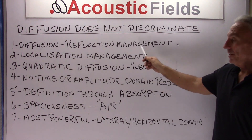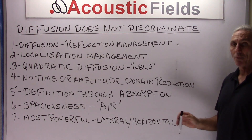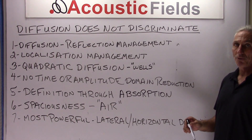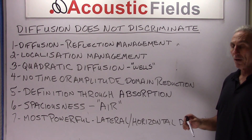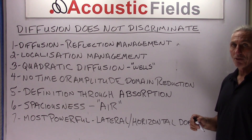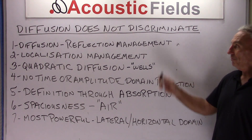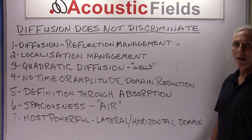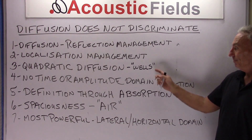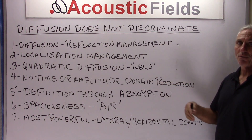It's a device to manage reflections, and our room is full of reflections off our wall surfaces. Managing the time signature of those reflections through absorption is critical, but diffusion also adds another element to it. What is a quadratic diffuser?